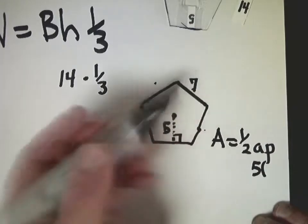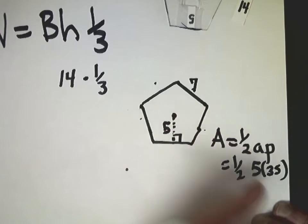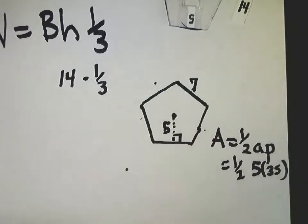So 35, and then one-half. A lot of people just put seven there, so if they give you a side, make sure that you multiply it by the number of sides. That's key.